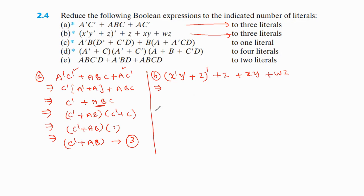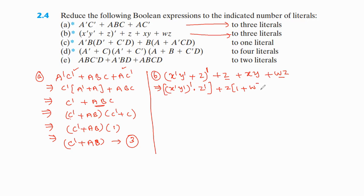Now we start the simplification process. Whenever the given Boolean function has a complement over a group, we apply De Morgan's law. This gives x'y'(ō · z̄), and in the remaining two terms z is common — take z common: z(1 + w) + xy.